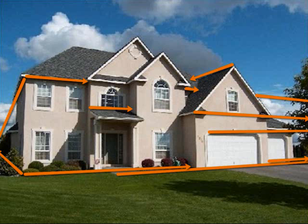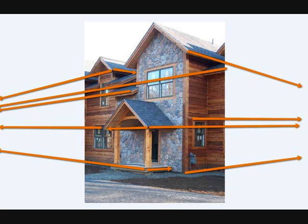This is another tricky one — it could almost be one point. But if you look at the side of the house, you can see where the planes converge, and therefore this house is a two-point perspective. This is another house that has planes all over the place, but if you look for a flat surface at a right angle to the viewer, it's not there. That makes it a two-point perspective.